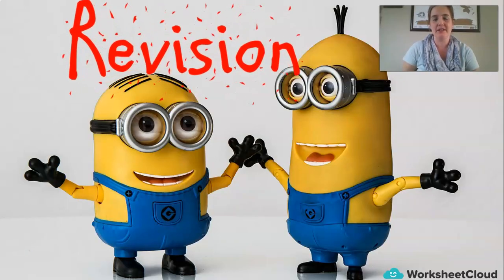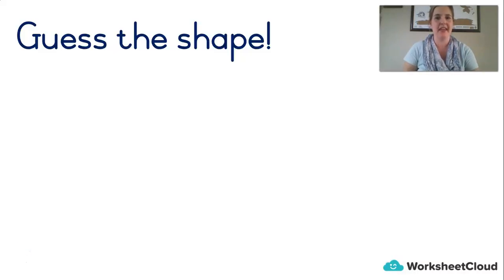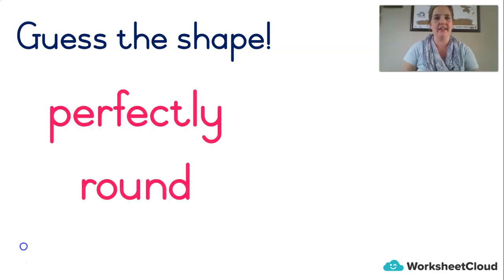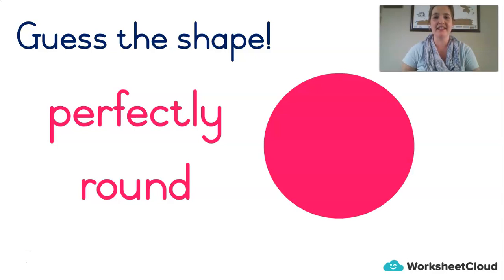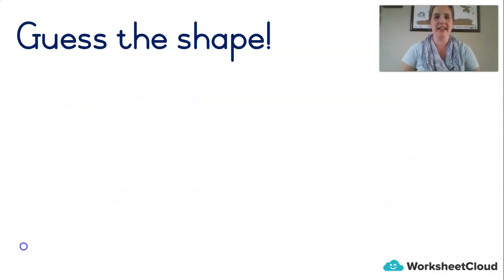We did shapes last time, so let's see if you can remember your shapes. I'll explain the shape and you guess. The first clue is: it's perfectly round and it's a 2D shape. What 2D shape is perfectly round? It's a circle! Well done!